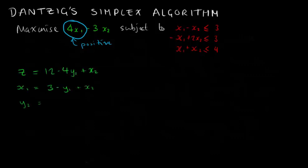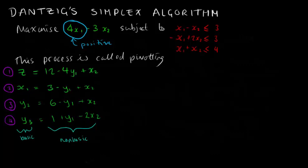The previously non-basic variable, x sub 1, is called the entering variable, and the previously basic variable, y sub 1, is called the leaving variable.